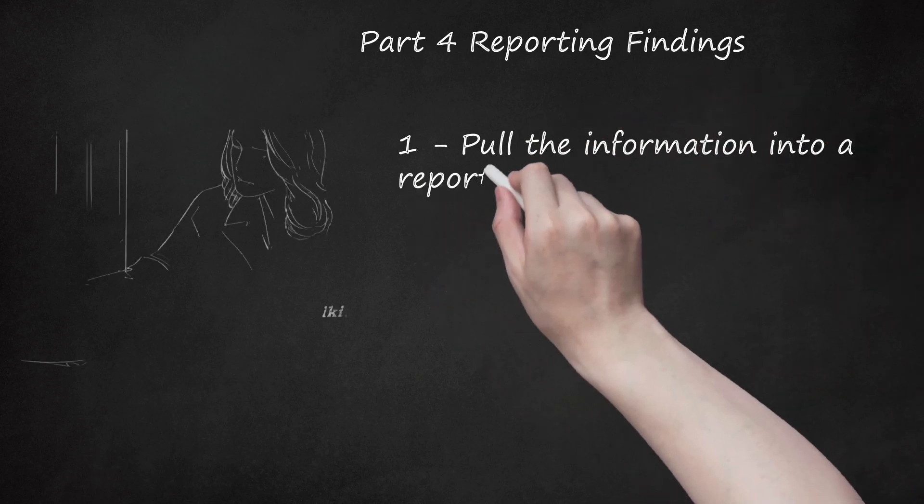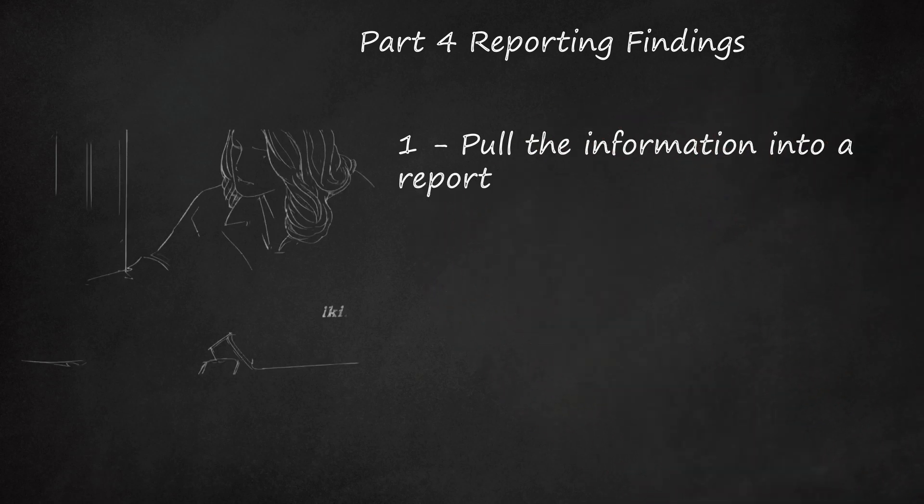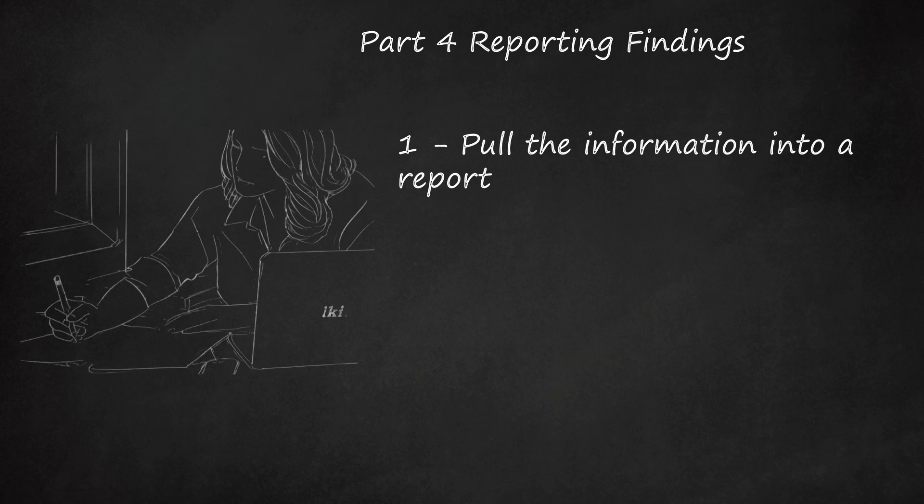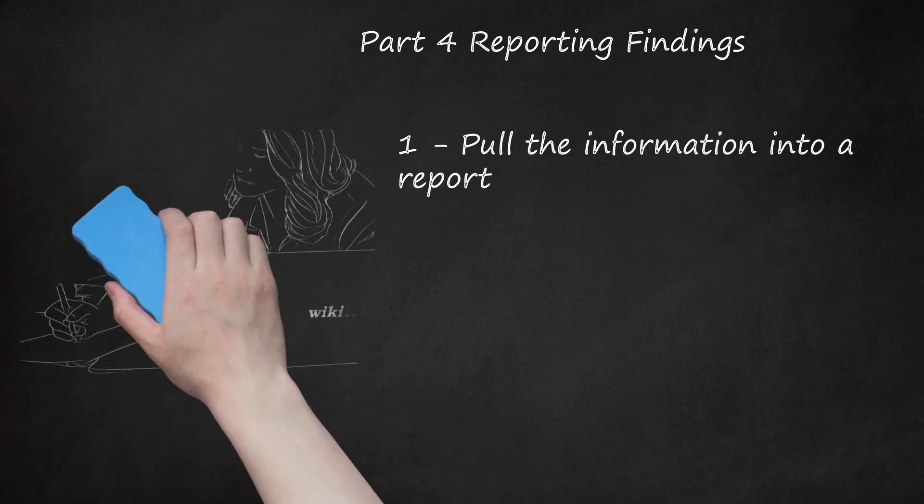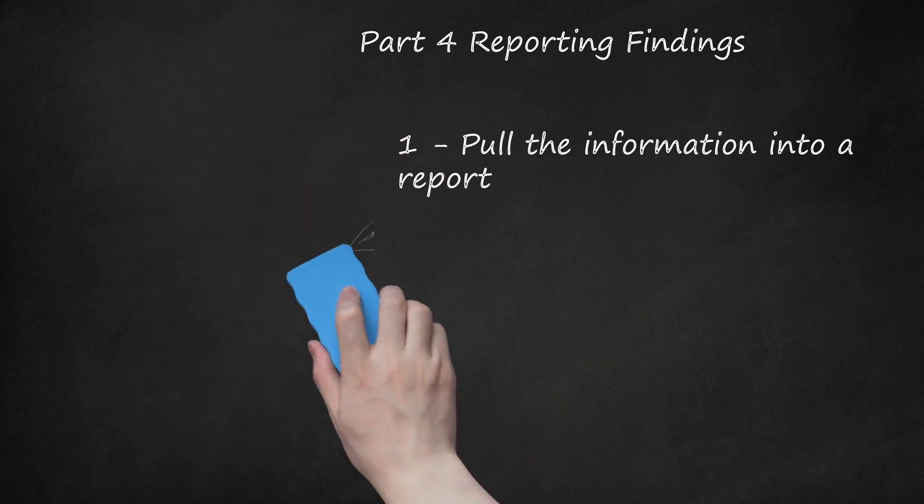Part 4: Reporting Findings. Step 1: Pull the Information into a Report. Once you have gathered the information for each part and written it up, you need to pull the whole thing together into one big report. Divide it into major processes and sub-processes, so it is easy to read. Use visuals where possible to clarify understanding. In addition, be sure to be as concise as possible, as many people will need to read this report.